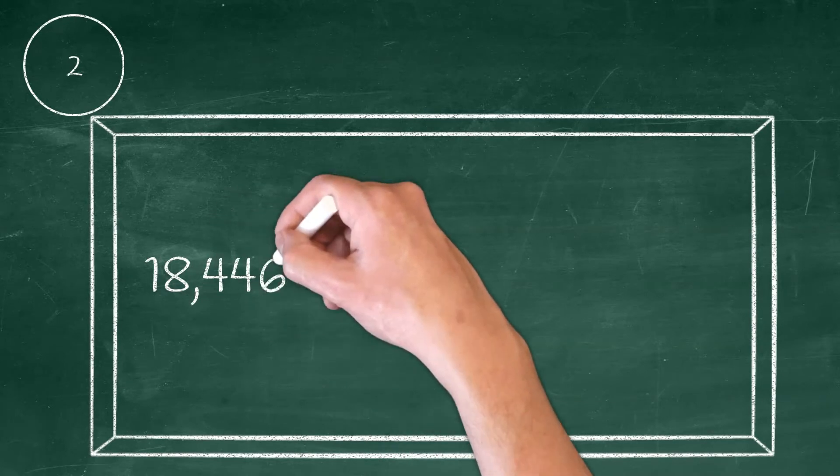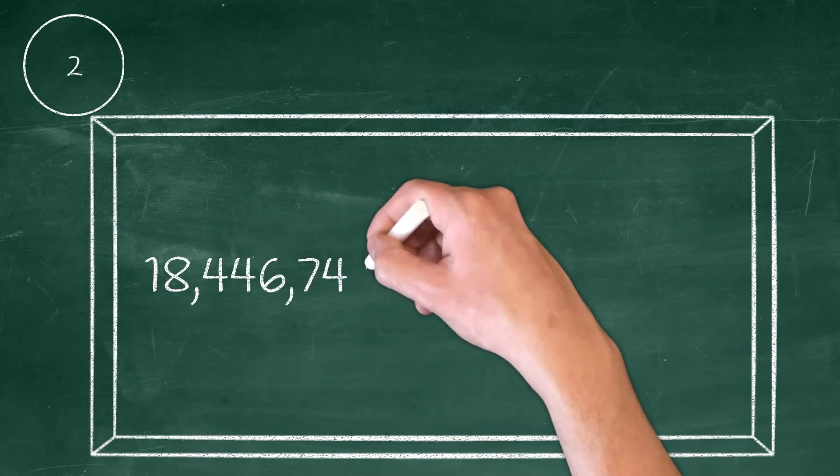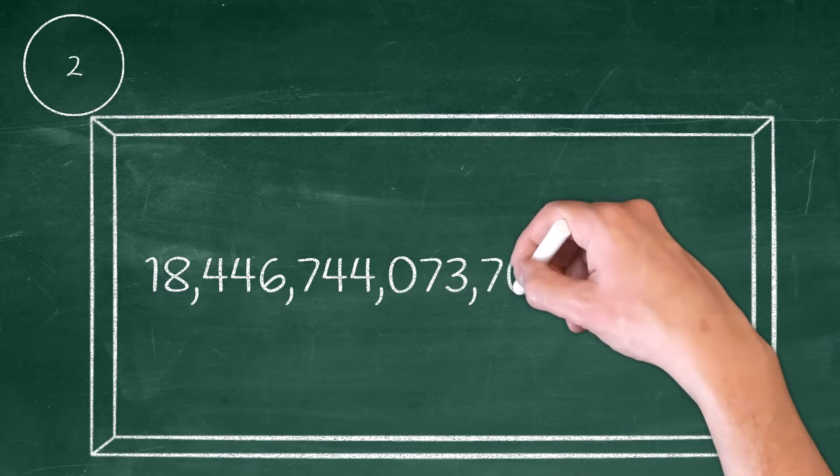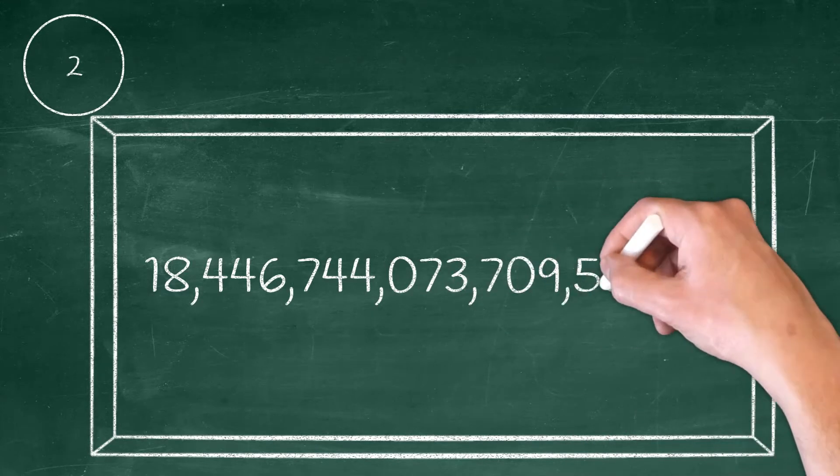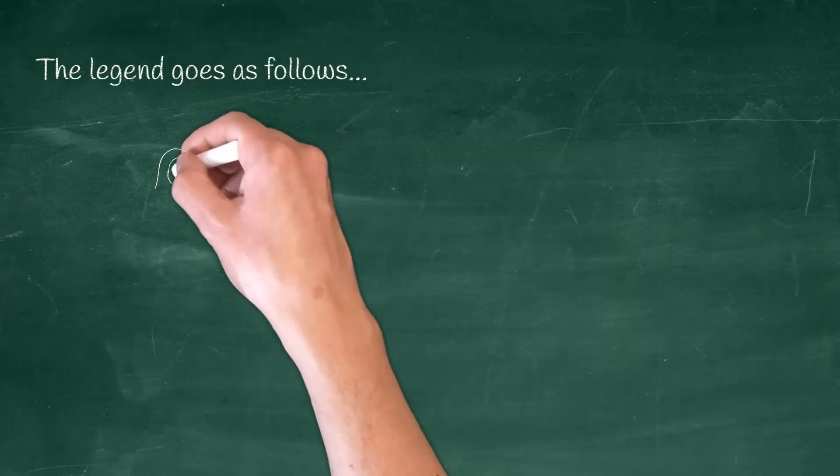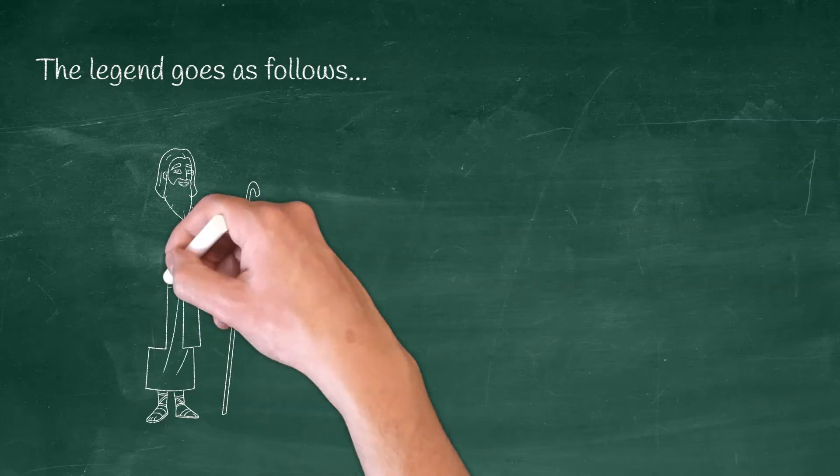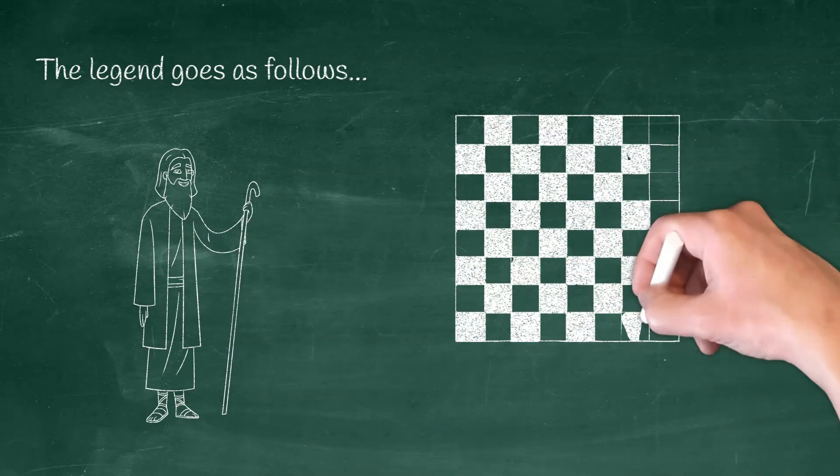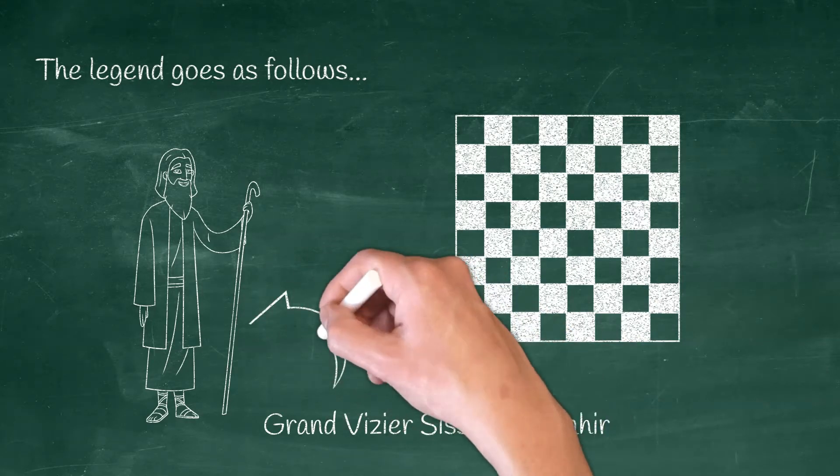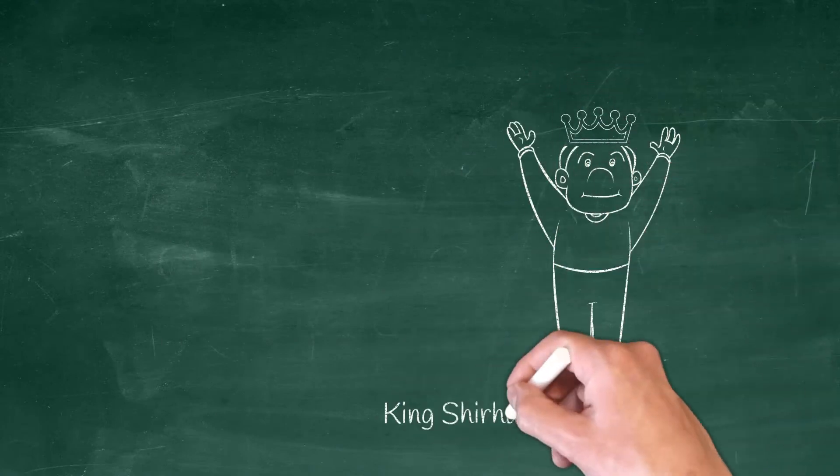18 trillion, 446 thousand, 744 billion, 73 thousand, 709 million, 551 thousand, 615. This number does have a story. There is this bloke who invented chess, right? He's telling how cool it is and teaching people how to play it. Word of mouth reaches the king, and he loves it. He even plays like three or four times a day.